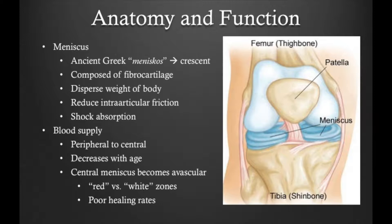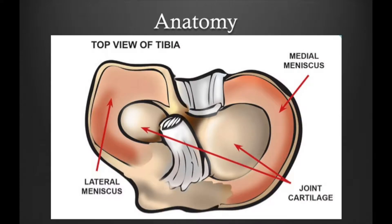Its blood supply is from peripheral to central and decreases with age. This is why meniscus tears often do not heal, because the meniscus does not have a good blood supply. The lateral meniscus and the medial meniscus have a different form and function. The medial meniscus is larger and more C-shaped, while the lateral meniscus is smaller, more mobile, and more round.